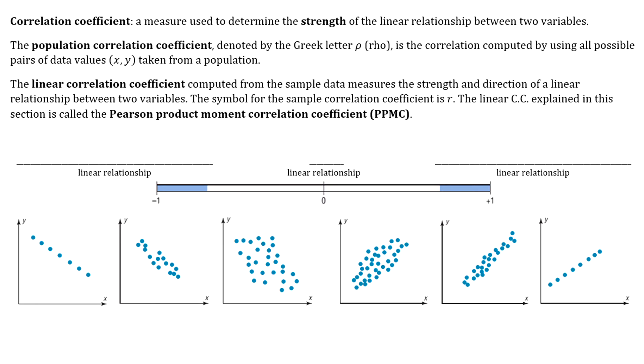Now there's two correlation coefficients. The first one is the population correlation coefficient, and the symbol for that is the Greek letter rho. That's not a P, it's a Greek letter pronounced rho, and that's going to be the correlation that's computed by using all possible pairs of data values taken from a population. We know that typically that's not possible to actually get data from your entire population, so that's why we're going to focus on the linear correlation coefficient, which is computed from the sample data.